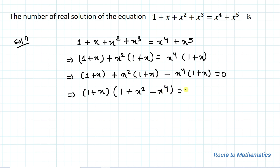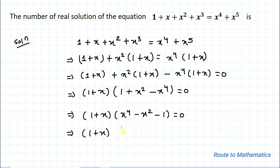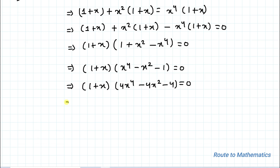Taking (1 + x) common gives (1 + x)(1 + x² − x⁴) = 0. In the next step we can rewrite this as (1 + x)(x⁴ − x² − 1) = 0 by taking −1 common. Now multiplying the bracket by 4 on both sides: (1 + x)(4x⁴ − 4x² − 4) = 0.